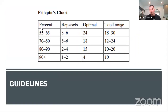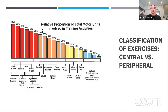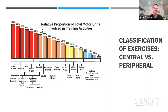My guidelines for programming isometrics are very similar to how I program Olympic lifting as it pertains to explosive overcoming and yielding isometrics. We use a prevalence chart — a tried-and-true method that's stood the test of time for prescribing the right intensities and getting optimal ranges. We classify exercises as central versus peripheral based on total motor unit involvement.